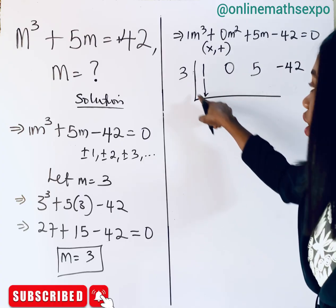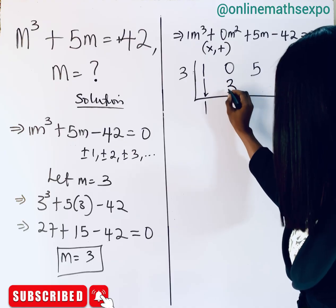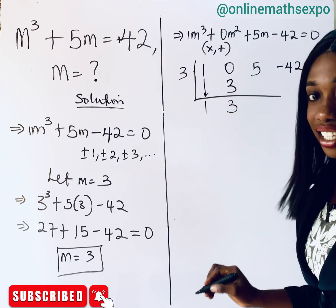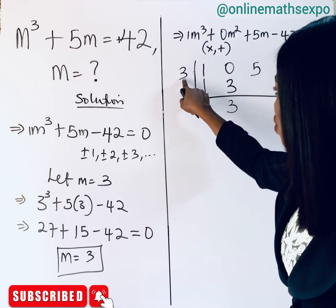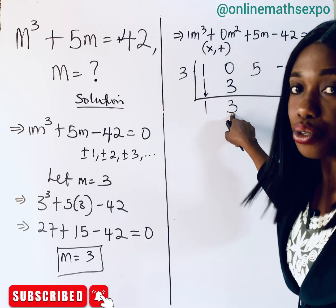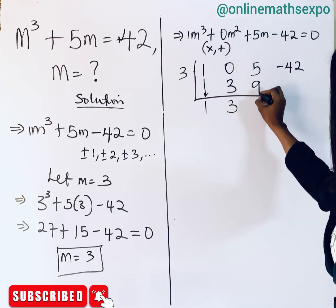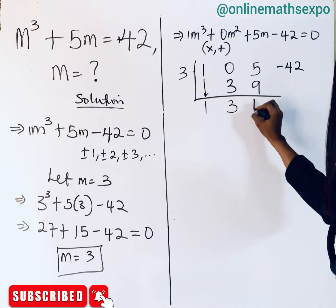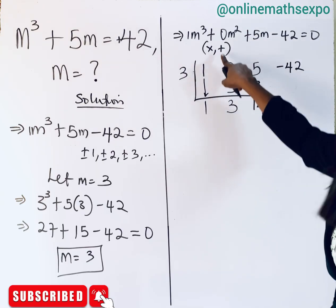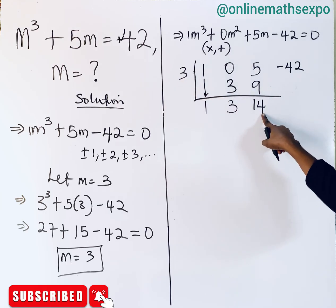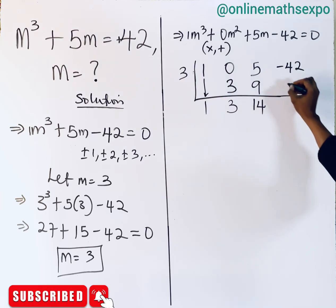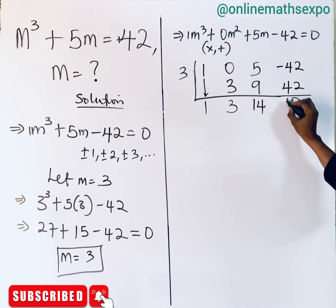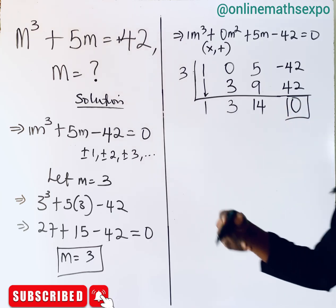The rule is: multiply then add. We multiply 3 × 1 = 3, add to 0 to get 3. Then 3 × 3 = 9, add to 5 to get 14. Then 3 × 14 = 42, add to −42 to get 0. The remainder is zero, confirming m = 3 is a solution.